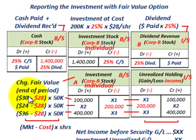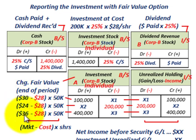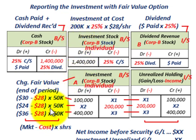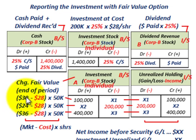You compare the cost to the fair value for each reporting period. Year one: market price was $30 per share; year two: $24 per share; year three: $36 per share. Always compare your cost to the fair market value, then multiply by your ownership shares — 25% of 200,000 shares gives 50,000 shares. For year one, the market price exceeded cost by $2 per share, so the investment account increased by $100,000.